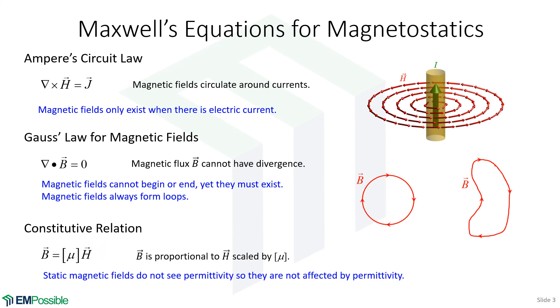But a big conclusion here, looking at all these equations, there is no permittivity. And so magnetic fields, magnetostatic fields, are not affected by permittivity.